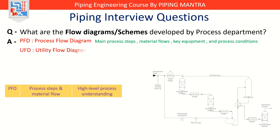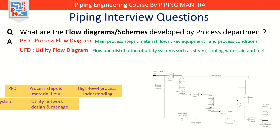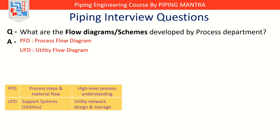Second is UFD, that is Utility Flow Diagram. If the PFD is about the main road, the UFD is about the side streets that keep the city alive. It shows the flow and distribution of utilities like steam, cooling water, compressed air, electricity, and fuel. These are the support systems that keep the main process running. Without them, the main road shuts down. The UFD helps in designing, maintaining, and managing these utility supply networks.